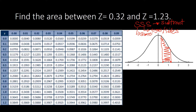Looking at the illustration, we know they are on the same side, so we subtract their areas. For z equal to 0.32, we locate 0.3 on the column and 2 as the last digit on the header, then move down and across — the area is 0.1255. Next, for z equal to 1.23, we locate 1.2 on the column and 3 on the header, move down and across to get the area.